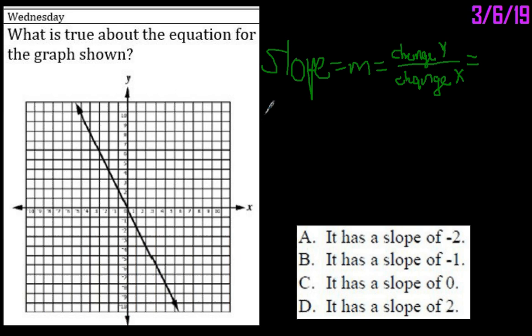As X increases, what happens to Y? Well, we're going along the X axis from left to right, so our values are increasing for X. And now, what happens with Y? So as we're going from left to right, what happens to Y? Y decreases.